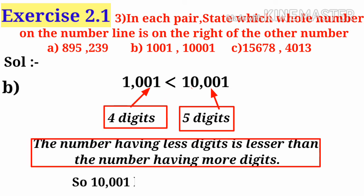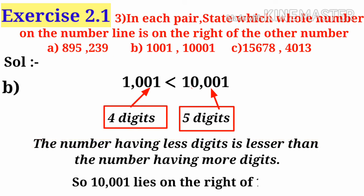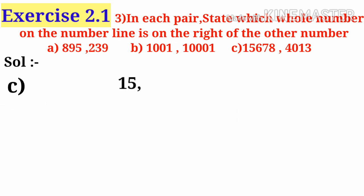So 1,001 is less than 10,001, so 10,001 lies on the right of 1,001.